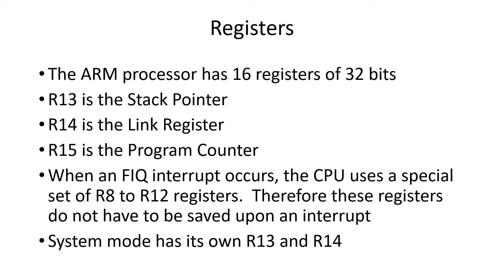The ARM processor originally had 16 registers that were 32 bits. Some registers had specific purposes. Register 13 is the stack pointer, similar to the ESP register on the Intel machine. R14 is the link register — when you call a function, it saves the return address in R14. Incidentally, register 14 is the same register the IBM 360/370 series used to store the return address. R15 is the program counter. Unlike the Intel system where the program counter is hidden, in the ARM system R15 is just another register the user can access, but it's automatically updated as you fetch additional instructions.